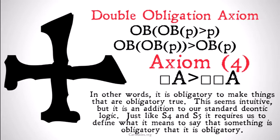Just like S4 and S5 become more and more contentious, the double obligation axiom is equally contentious. It's saying it's obligatory to make things that are obligatory true. Just like S4 and S5 require us to define multiple necessities on top of each other, this forces us to define what it means for something to be obligatory that's obligatory — which doesn't really have a clear meaning or semantics, at least not an obvious one.